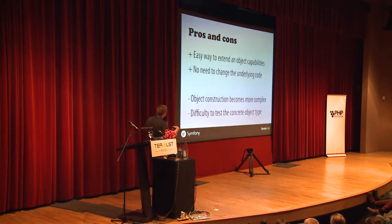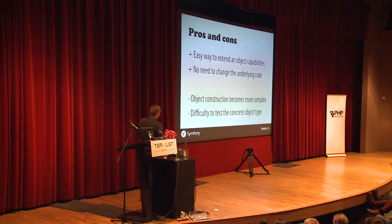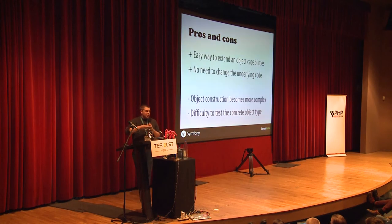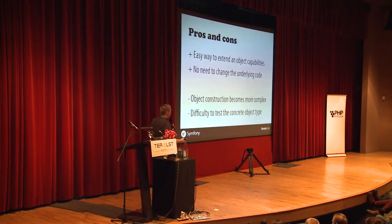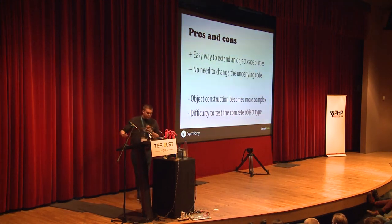The main drawback with this implementation is that you can't test against the concrete object type. If you use a decorator and you want to check that your object is, say, a MasterSlaveConnection, you can't — because if you do 'if connection instanceof MasterSlave', it will tell you it's not, because you're using a ProfiledConnection wrapping the MasterSlaveConnection. If you ever need to check the type, you may encounter this problem.